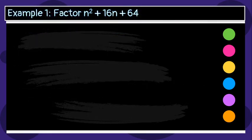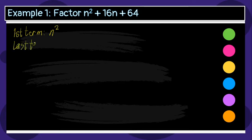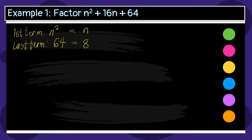Let's have an example. Factor n squared plus 16n plus 64. Let's check the first term and the last term. The first term is n squared, and the last term is 64. n squared is a perfect square because the exponent is an even number. 64 is also a perfect square because its square root is 8, meaning 8 times 8 equals 64. The square root of n squared is n — we divide the exponent by 2 to get the square root. So n and 8 are the square roots.